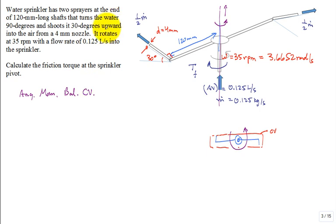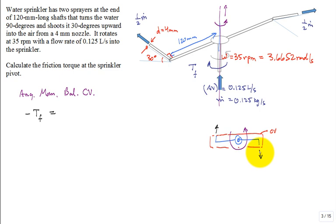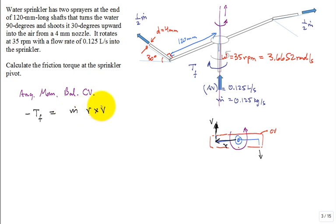The only applied moment is that friction torque, acting in the negative direction. The fluid exits at two locations. Because the fluid is exiting, the velocity V is in this direction. Taking R cross V for the torque gives M-dot times R cross V. Both exits are leaving the control volume, each with mass flow rate M-dot divided by 2, and since there are two of them the factor of 2 cancels.